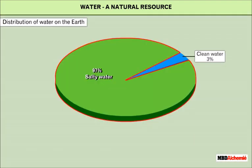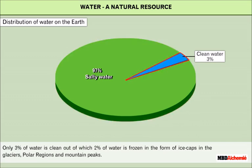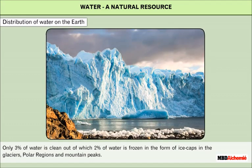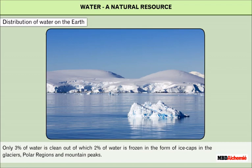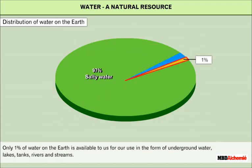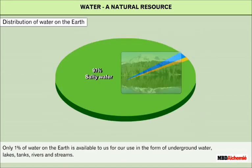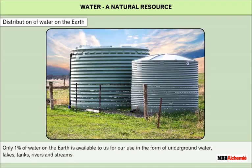About ninety-seven percent of water on the earth is salty and is present in the oceans and seas. Only three percent of water is clean, out of which two percent is frozen in the form of ice caps in glaciers, polar regions, and mountain peaks. Only one percent of water on the earth is available for our use, in the form of underground water, lakes, tanks, rivers, and streams.